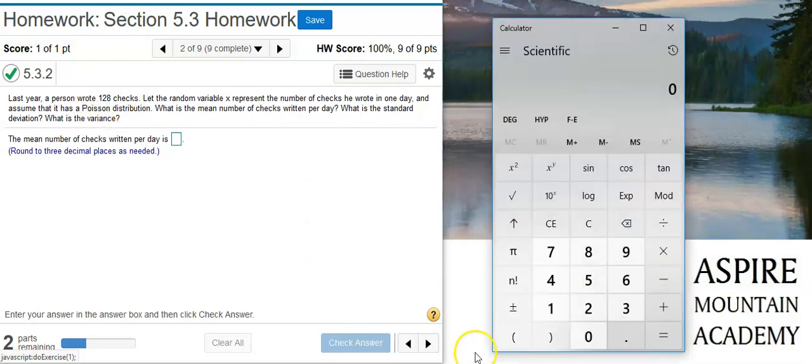So all I need to do is take my calculator, take the total number of checks, and divide it by the total number of days in a year, which for these problems throughout this course is going to be 365 days unless you're specifically told to use a different number. You'll always use 365.